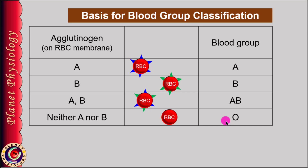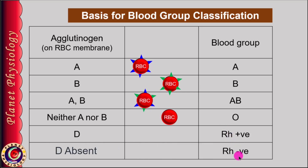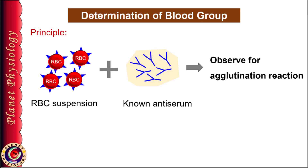Similarly, if RBCs have agglutinogen D, blood group is Rh positive, and if they lack agglutinogen D, blood group is Rh negative. With this background knowledge, let's start the practical part. To determine the blood group of any individual, we need to find out which agglutinogens are present on the surface of RBCs.